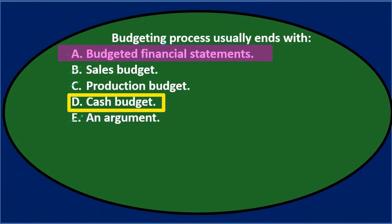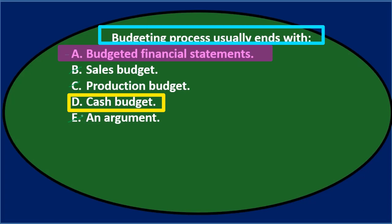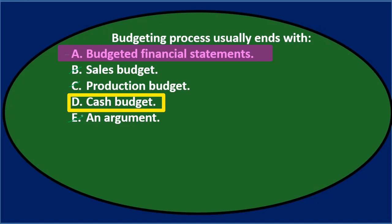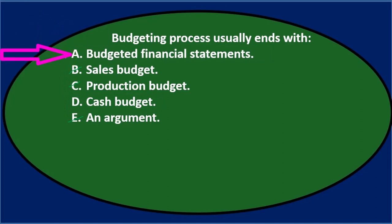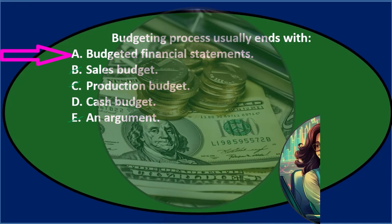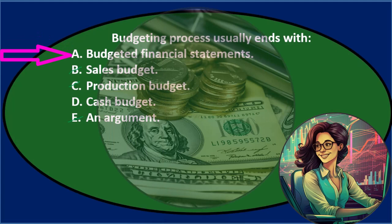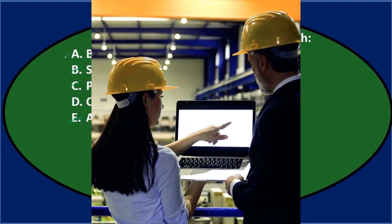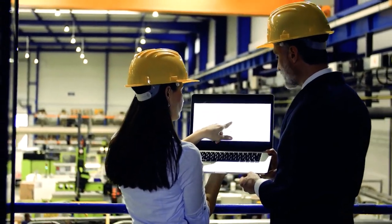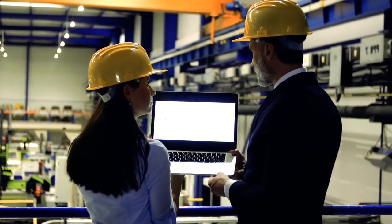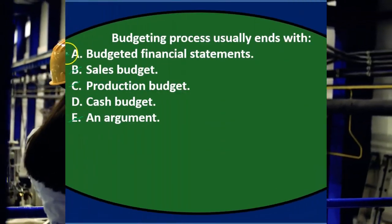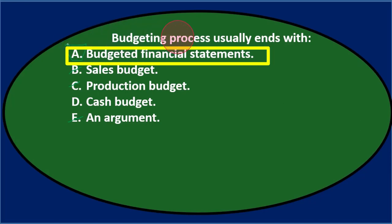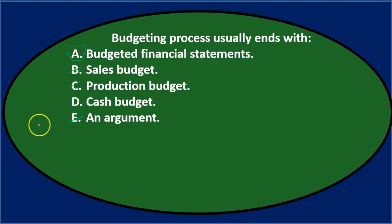Going through this again — the budgeting process usually ends with A, budgeted financial statements, or D, cash budget. Of those two, the financial statements would come after the cash budget. The cash budget is towards the end, but the financial statements are typically what we consider the end result. When you think of a budget, we're usually thinking about the income statement, trying to project into the future, plus the balance sheet showing where we'll be at the end of that period. Final answer: the budgeting process usually ends with A, budgeted financial statements.